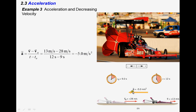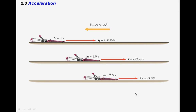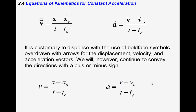When decelerating, the velocity vector still points in the positive x-axis but the acceleration vector points in the negative x-axis. With a constant acceleration of negative five meters per second squared, starting at 28 m/s: after one second it's 23 m/s, after another second it's 18 m/s — slowing down by five meters per second each second.